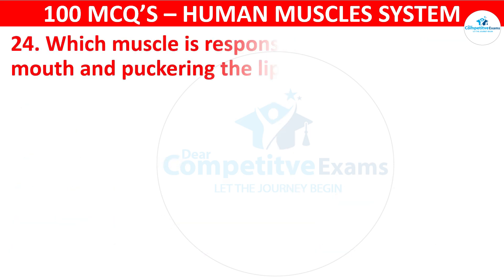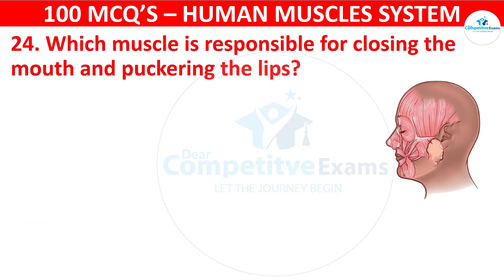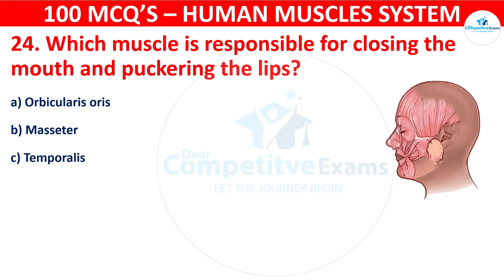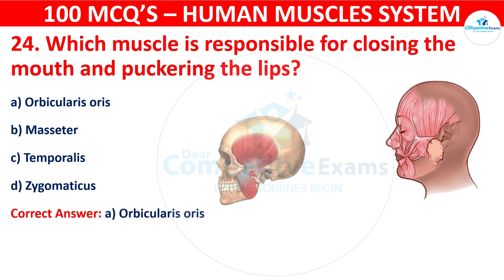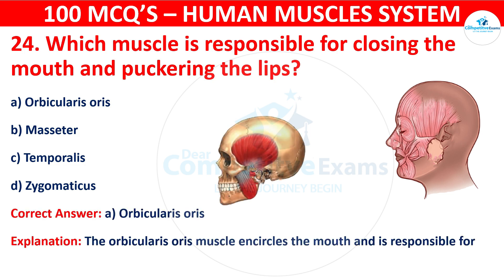Question number twenty-four: Which muscle is responsible for closing the mouth and puckering the lips? Your options are: Orbicularis oris, Masseter, Temporalis, or Zygomaticus. The correct answer is A, that is orbicularis oris. The orbicularis oris muscle encircles the mouth and is responsible for closing the mouth and puckering the lips.